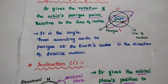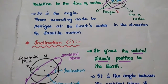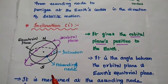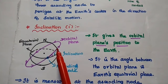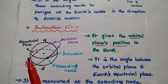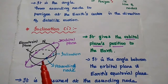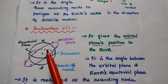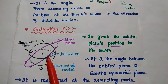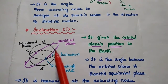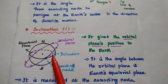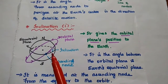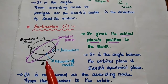The next element is inclination. It is the angle between the satellite orbit plane and the equatorial plane. It is mainly used to give the orbital plane's position with respect to the Earth.